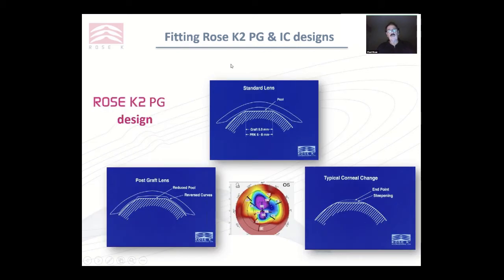So what we do with the PG and IC designs is introduce a very flat central curve to stop this deep pooling, and then we put a reverse geometry curve in, which is steeper than our central curve, to give us the sagittal height that we need to fit this cornea. And then we flatten it out in the peripheral curves.